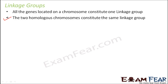The question is: how do we know how many linkage groups are present in an organism? Since both homologous chromosomes are part of one linkage group, the number of pairs of homologous chromosomes present in an organism is equal to the number of linkage groups.